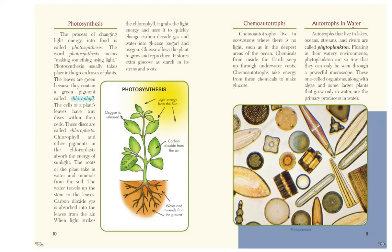Autotrophs and water. Autotrophs that live in lakes, oceans, streams, and rivers are called phytoplankton. Floating in their watery environments, phytoplankton are so tiny that they can be seen only through a powerful microscope. These one-celled organisms, along with algae and some larger plants that grow only in water, are the primary producers in water.